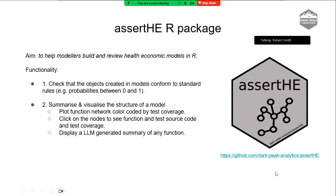Then I got really carried away and number two started: how to summarize and visualize the structure of a model. What this does is allow you to plot the function network. Any model in R, if it's well constructed, should be a network of functions — some functions call other functions, others are standalone. Often you'll have nested functions where function one calls function two, which calls function three, which calls function four. Understanding how all those fit together is really important. So we built this package which allows you to pass through your project folder, and it will recognize a folder for functions and a folder for tests, loop through all the code, identify where the functions are, exactly which line they're specified on, identify where the documentation for each function is, and identify if there's a corresponding test in the test folder.